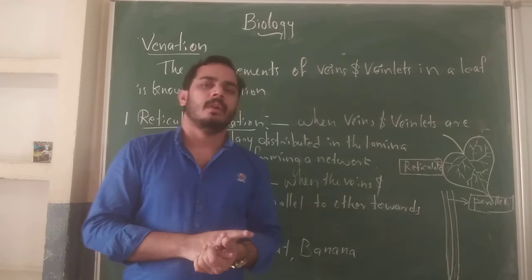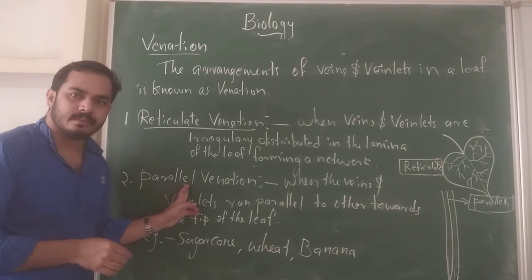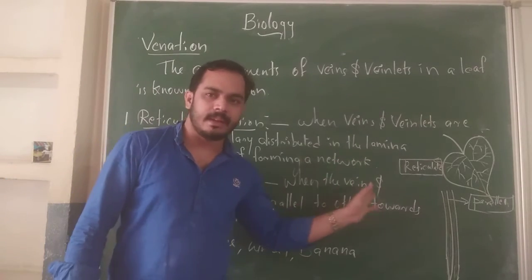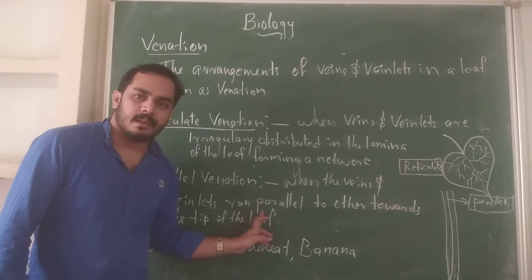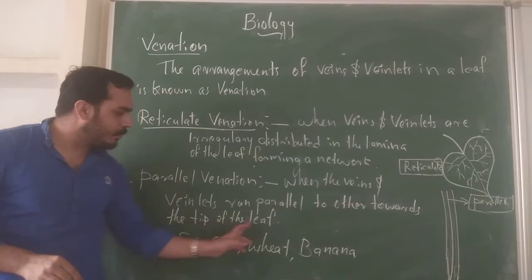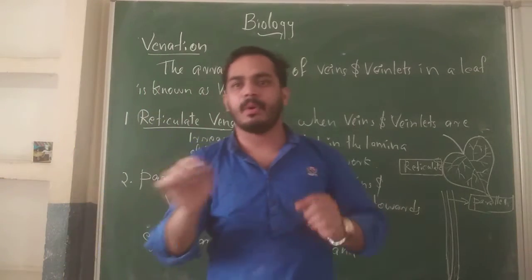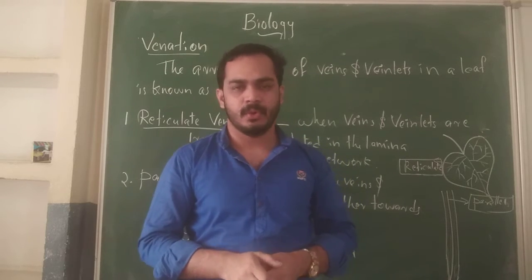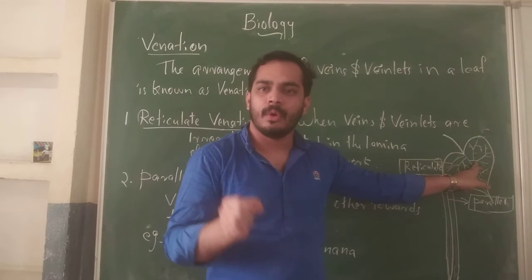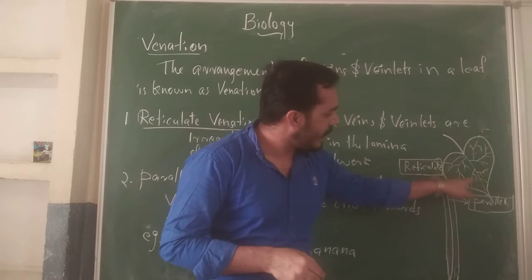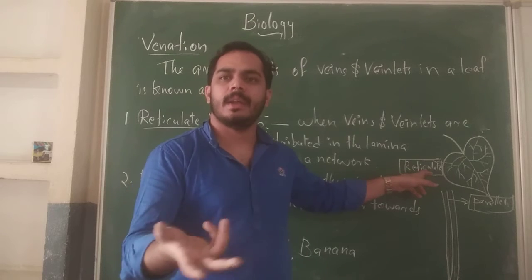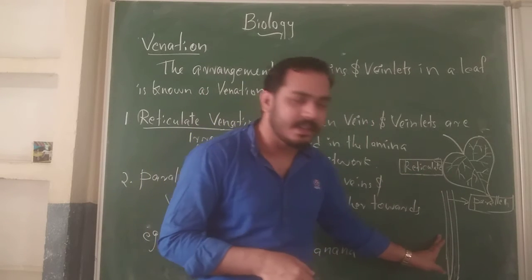Next is parallel Venation. The word itself gives the answer — parallel Venation means when the veins and veinlets run parallel to each other towards the tip of the leaf, it is called parallel Venation. Here, two types of leaves are shown. The first is an example of reticulate Venation, where the veins are irregularly distributed.